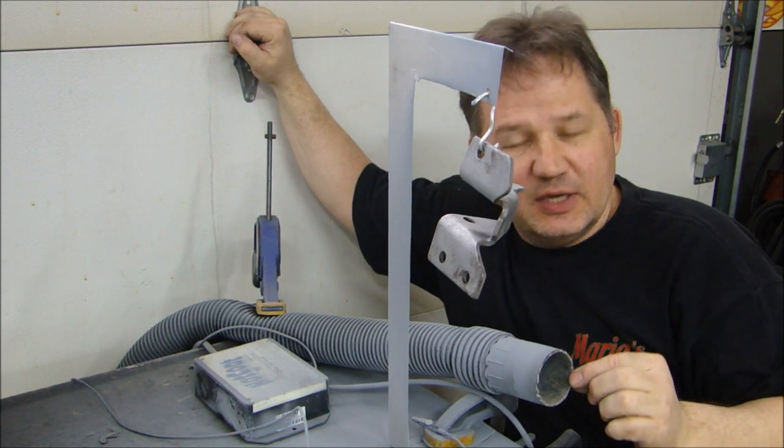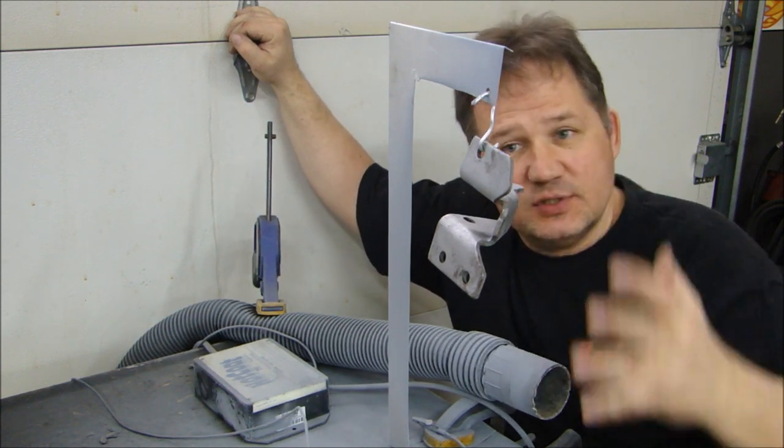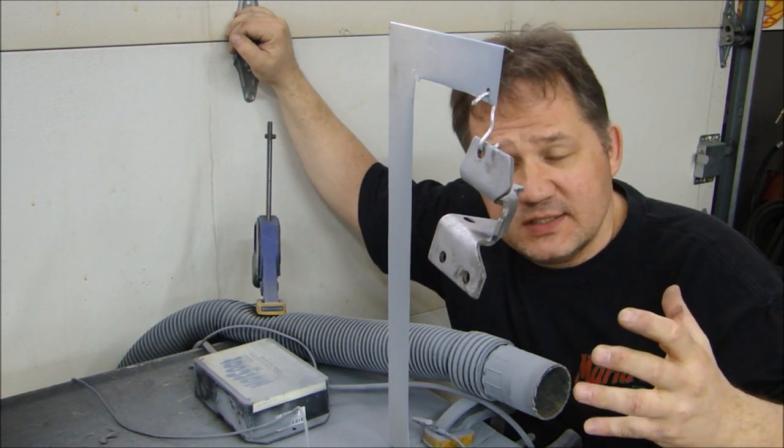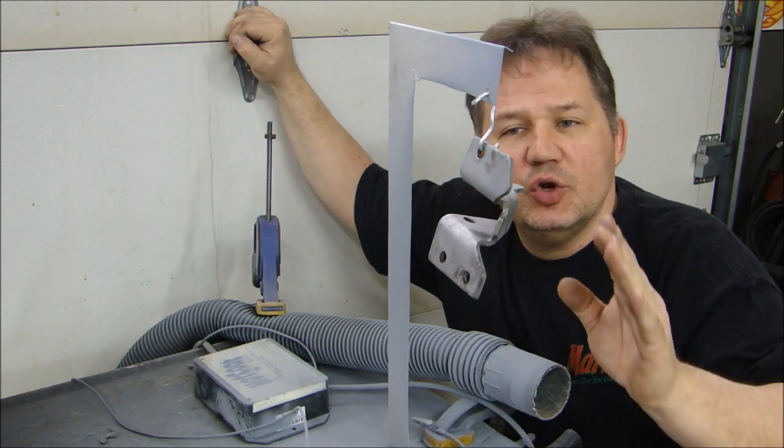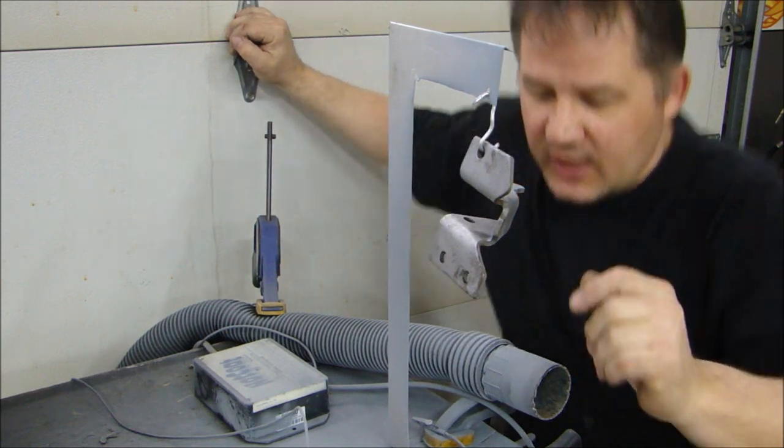The nice thing about this is I take my shop vac and I clamp it to the top to suck up all the powder that's in the air. I do it on a tabletop and it makes a minimum amount of mess. Real easy way to do it. Let me show you how it's done.